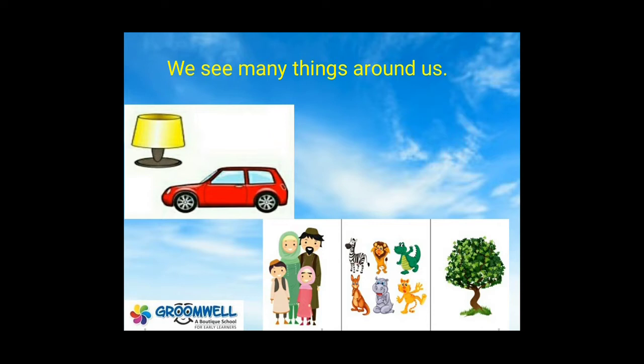Look outside the window. Make a list of 10 things that you can see outside your window — write them down in your notebook. Now in your notebook, make two columns: things that move and talk, and things that do not move and talk. Put the 10 things on your list under the correct columns.